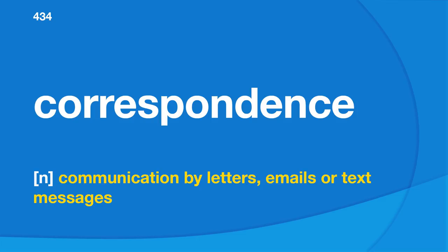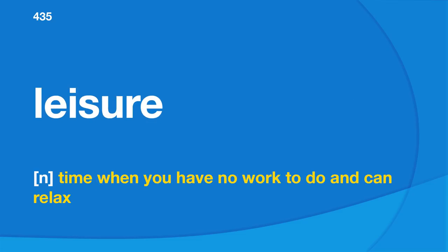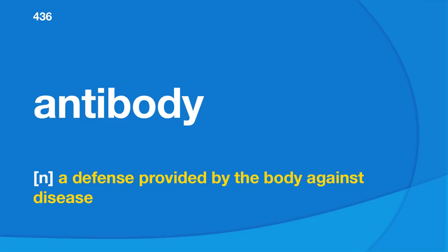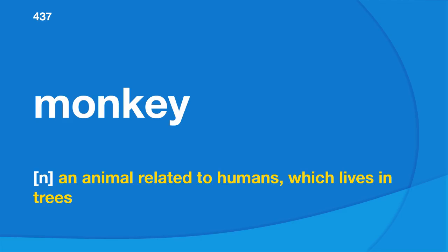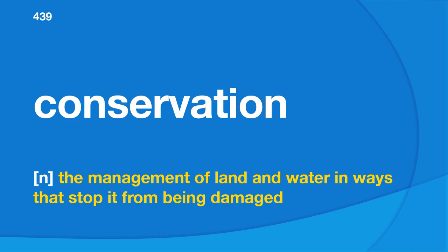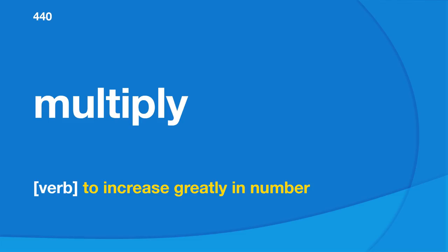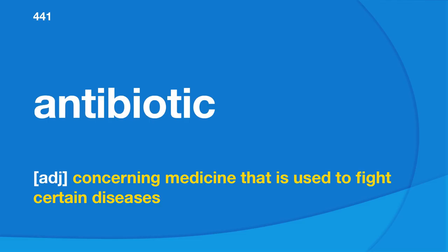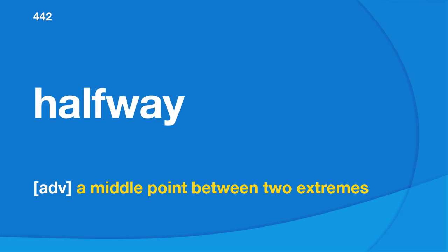Static: being unchangeable or unmovable. Conservation: the management of land and water in ways that stop it from being damaged. Multiply: to increase greatly in number. Antibiotic: concerning medicine that is used to fight certain diseases. Halfway: a middle point between two extremes. Simulate: to look, feel, or behave like something, to copy. Behavioral: concerning the way people act. Widespread: happening or existing in many places, affecting many people.